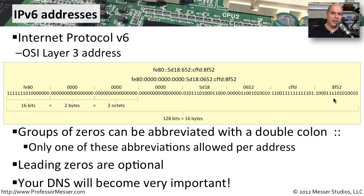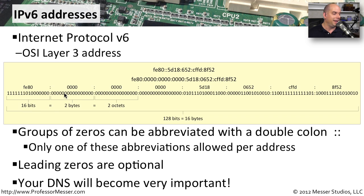There were a lot of reasons for making the IP address this long, but one of the big reasons is that we wanted to be sure we would never run out of addresses again. You'll notice that each section of an IPv6 address is separated with a colon, and we have two octets — two bytes, or 16 bits — in each section of an IPv6 address.